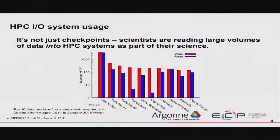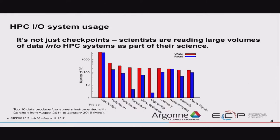I/O is a common concern across a lot of fields. When we survey the system and see who's using it, we see a huge variety of scientific and engineering domains. This graph shows the top ten producers and consumers for roughly a half-year period on Mira a couple years ago, and the largest producers are moving petabytes of data on and off the system. Also interesting: sometimes we think checkpoints are the most common thing that happens, but actually a lot of domains are reading a tremendous amount of data too. So reading and writing are both important, depending on what you're doing.